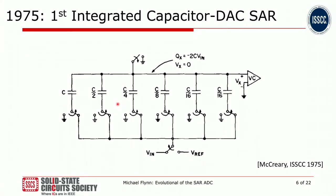Most of you are familiar with charge redistribution successive approximation ADCs. The first of those was published in 1975 by McCreary and Gray in a very famous paper at ISSCC. You can see it is composed of an array of binary-weighted capacitors — C, C/2, C/4, and so on — which feed into a comparator. The successive approximation register is actually off-chip in this case. This sort of architecture is ideal for CMOS processes, because CMOS processes are very good for implementing capacitors and switches, and the input to the comparator in CMOS can be high impedance, thanks to the gate of a MOSFET presenting a capacitive input.